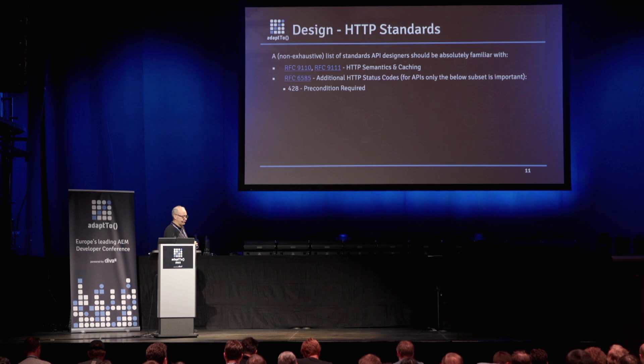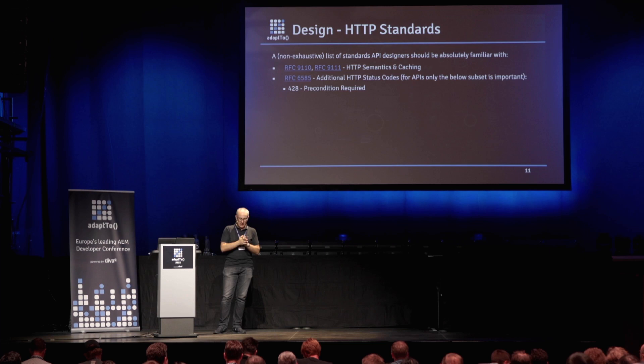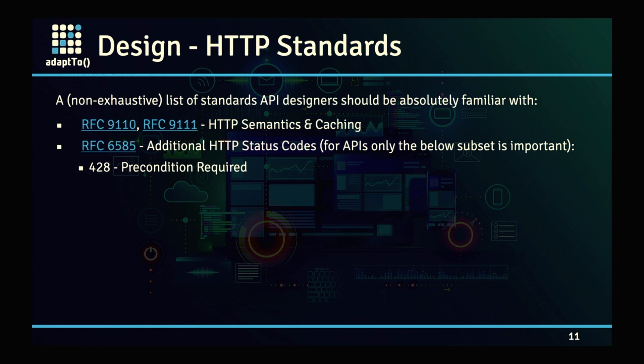Then you have the additional HTTP status codes. Three from this standard are very important. Precondition Required (428) is a status you use when you have an API that requires a conditional header — the If-Match or If-Unmodified-Since headers. You might have other preconditions, but it's what you reply to a client that can only execute an operation if a condition is fulfilled. If the condition is missing completely, you reply with this status. If the condition doesn't apply, you reply with a different one.